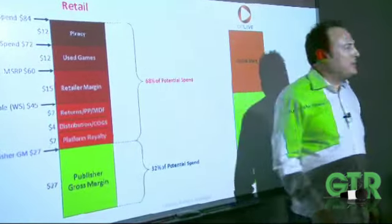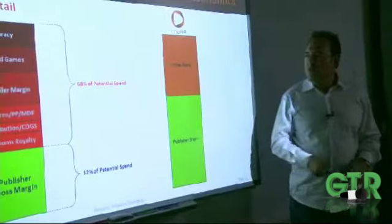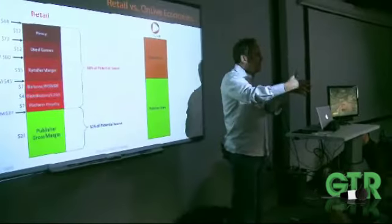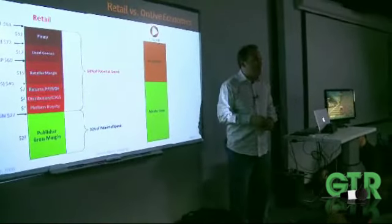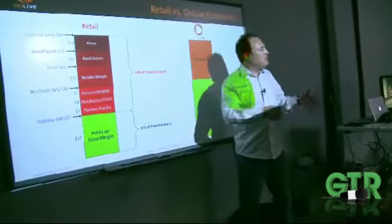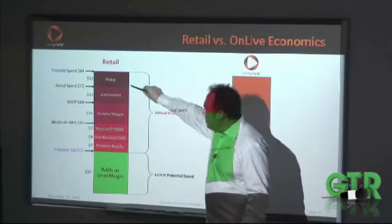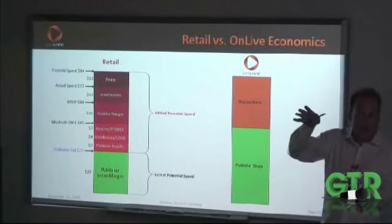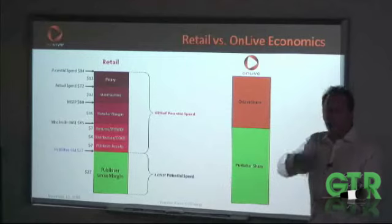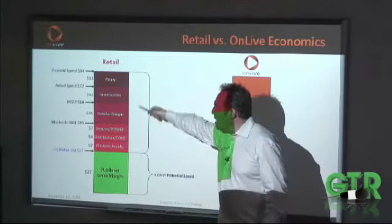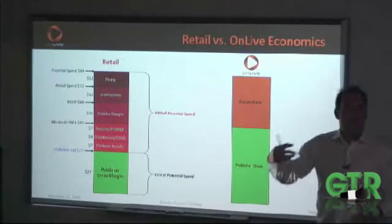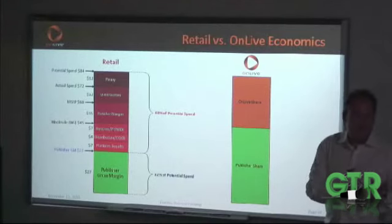Out of that $60, only $27 — less than half — goes to the publisher. The other problem is used games. When you go to GameStop and finish playing a game, they pay you $20 for it and you buy a $40 used game. GameStop makes $20 in that transaction, but none of that money goes to the game publisher who took the risk to develop the game, or to the platform maker. Before used games, when demand decreased the publisher would lower the price and still get a smaller margin for the tail of the game's life. Now nearly a quarter of sales are used game sales, and it's getting larger.